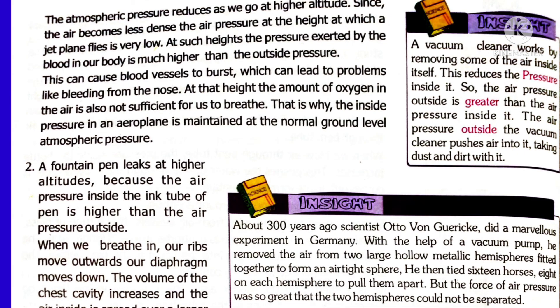But when we go higher, the number of air particles is less, meaning atmospheric pressure is reduced at higher altitudes. At the Earth's surface, inside and outside pressures are equal, but when we go higher, outside pressure is less, so our body pressure becomes more. That is the reason some people start bleeding at high altitude — when our body pressure is more than the atmospheric pressure, blood vessels burst, leading to bleeding through the nose.